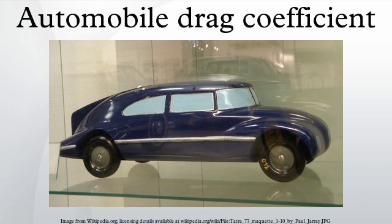A roof rack is a common trait on many SUV and station wagon vehicles. While roof racks are very useful in carrying extra storage on a vehicle, they also increase the frontal area of the vehicle and increase the drag coefficient. As the air flows over the top of the vehicle, following the smooth lines of the hood and windshield, it then collides with the roof rack and causes turbulence. The removal of this part has led to increases in fuel efficiency in several studies.